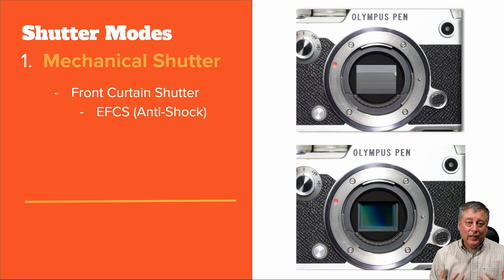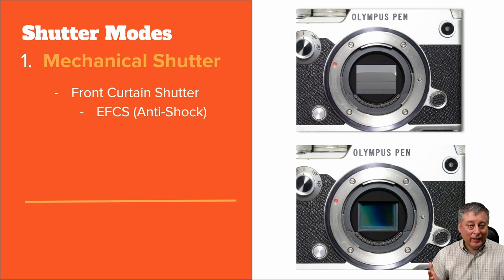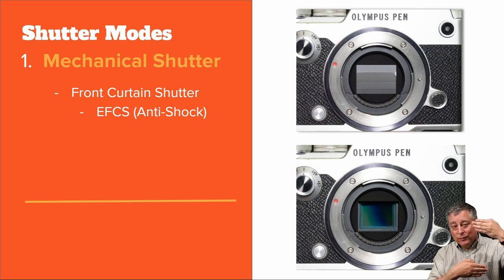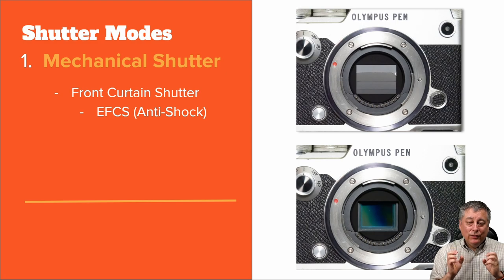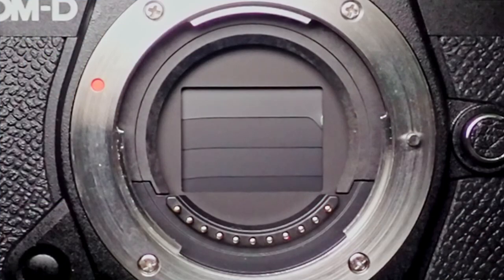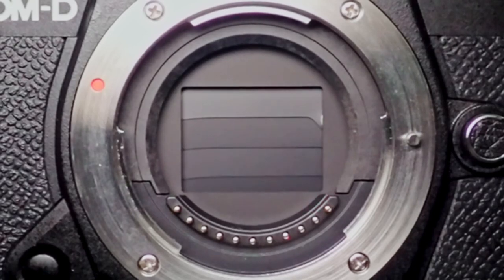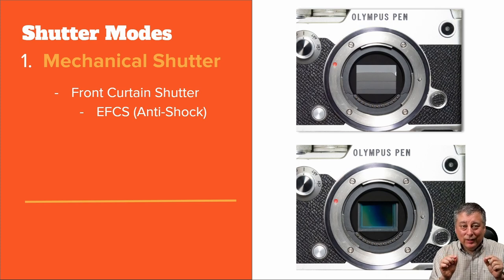Now there are subsets to the mechanical shutter, like front curtain shutter, sometimes called EFCS or electronic front curtain shutter, sometimes called anti-shock. The idea being that instead of closing the shutters before taking the exposure, the shutters stay open, the camera turns the sensor on, and then to end the exposure the shutters will close. As you saw in the video, when the curtains open and close you can see them bouncing inside the camera, and that motion may cause vibrations that will show up in your image and make your images a little bit blurry — sometimes a lot blurry — depending on whether you're using a telephoto lens or not.